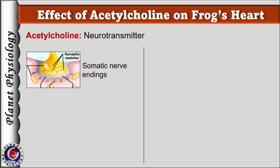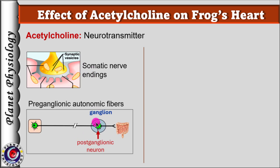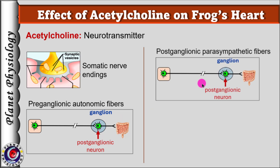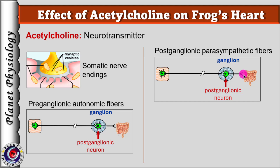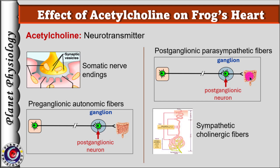Acetylcholine is a neurotransmitter mainly secreted at the neuromuscular junction. It is also released by all the preganglionic autonomic fibers — that is, both sympathetic as well as parasympathetic fibers — and it is the neurotransmitter secreted by the postganglionic parasympathetic nerves. In addition, a few sympathetic cholinergic fibers also release acetylcholine as their neurotransmitter. Apart from these fibers, acetylcholine is also released by many nerve fibers in the brain. Since the vagus is a parasympathetic nerve, on stimulation it releases acetylcholine and causes the heart to stop in diastole.